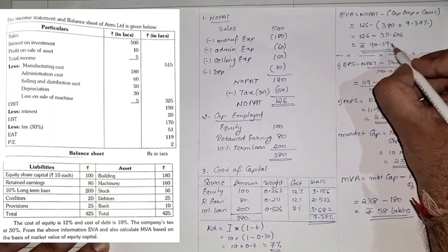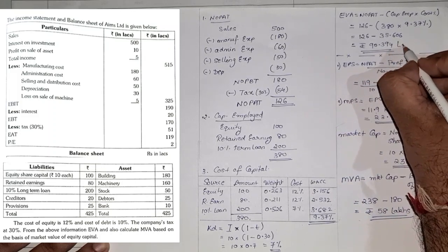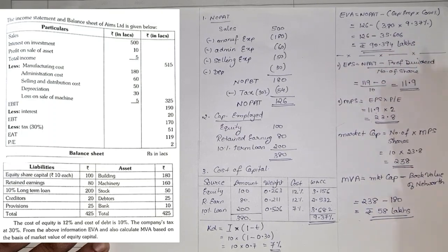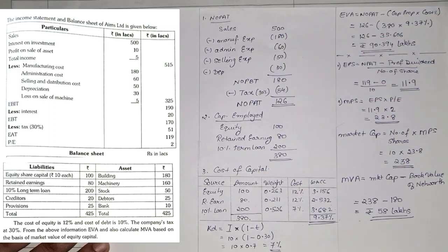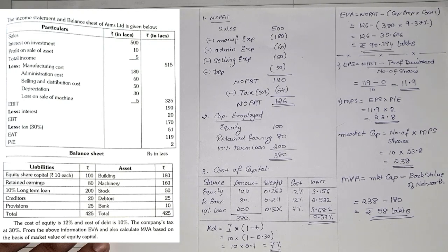So this is how you solve a sum based on EVA and MVA when given the income statement and balance sheet. I hope everyone has understood this first type of sum. Now let us look at a different variation.